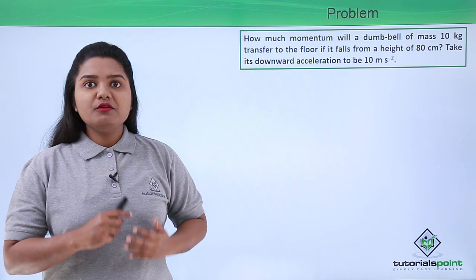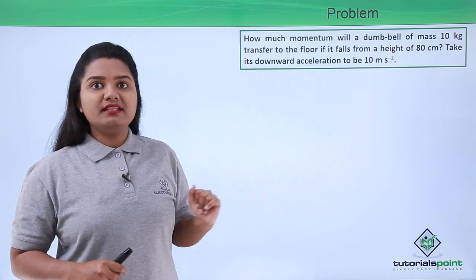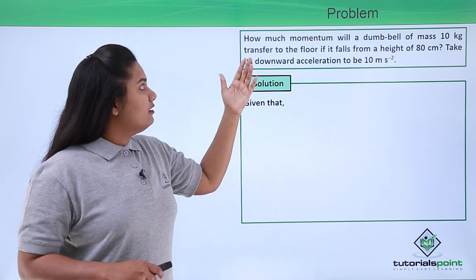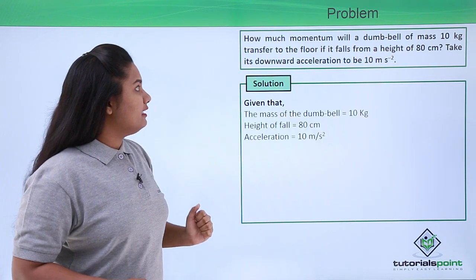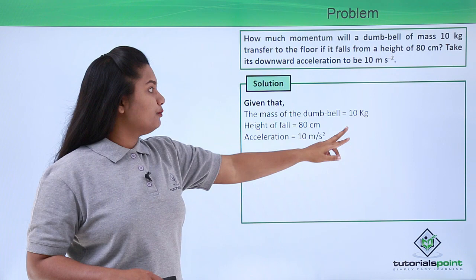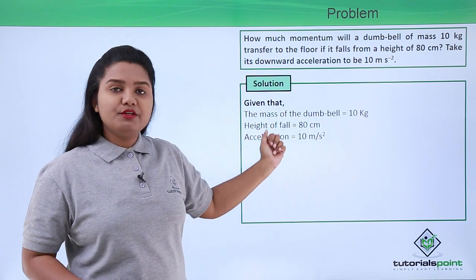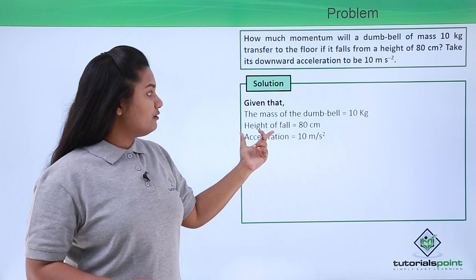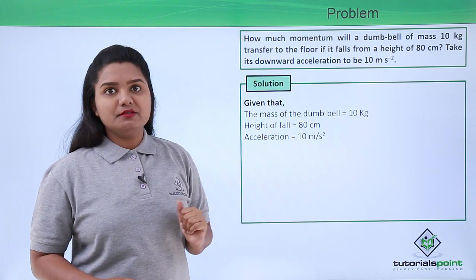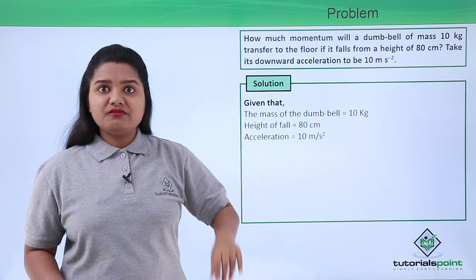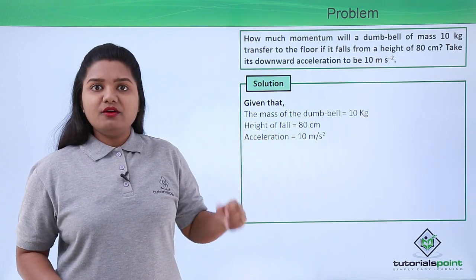First, we'll list out the things given in the question. The mass of the dumbbell is 10 kg, the height of fall is 80 centimeters, and the acceleration is 10 meters per second squared.